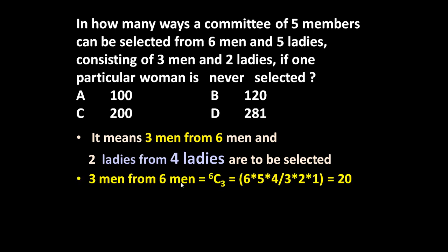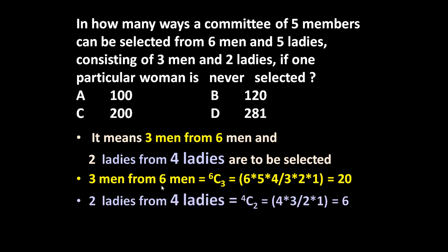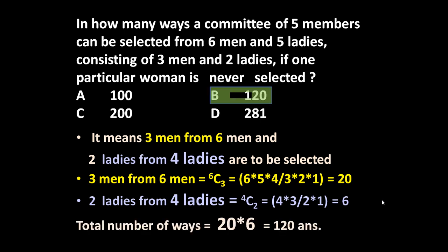Three men from six men can be selected in 6C3, which equals six into five into four divided by three into two into one, equal to twenty ways. Two ladies from four ladies can be selected in 4C2, which equals four into three divided by two into one, equal to six ways. Total number of ways is twenty into six, equal to one hundred and twenty. So the answer is 120.